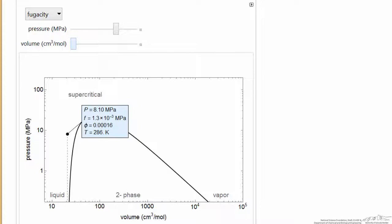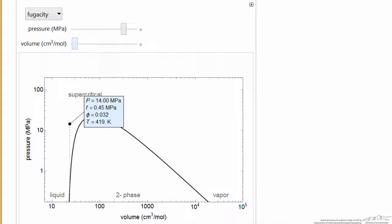The fugacity is very small because what we really are comparing, and perhaps it's even easier to see. Let's look at a slightly higher pressure. So we have here a pretty large difference between the fugacity and the pressure. At this temperature,